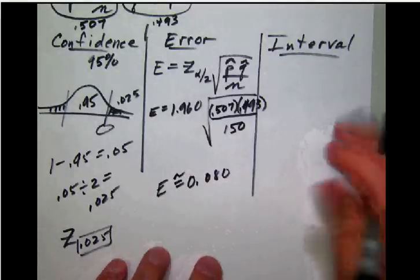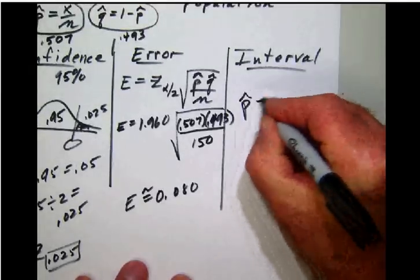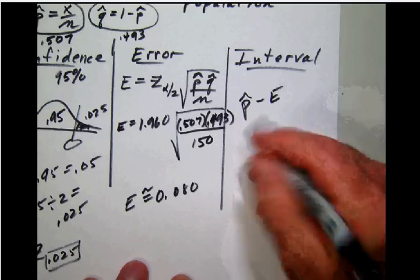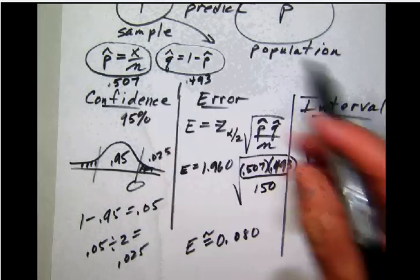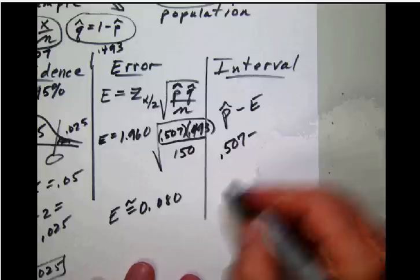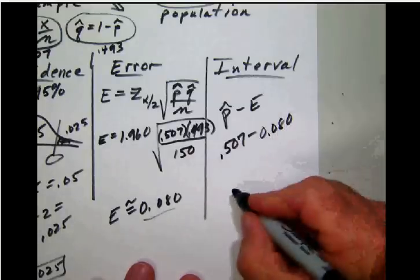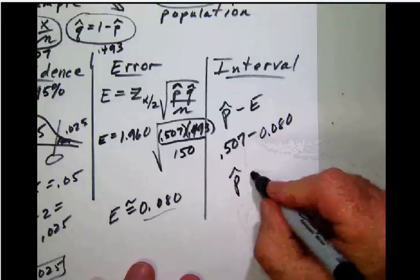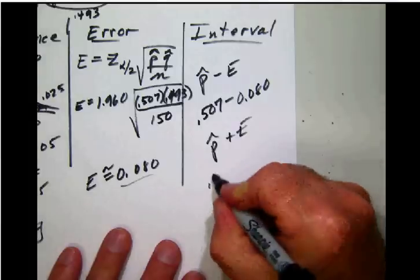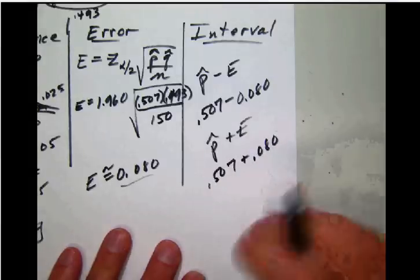And now for our final answer, our final interval. Well, once again, we're going to take our p hat minus our error. Remember our p hat we had a while ago at 0.507. We're going to subtract off our error, which was 0.080. And then of course, we're going to take for the upper limit p hat plus our error, which is 0.507 plus 0.080. And once again.